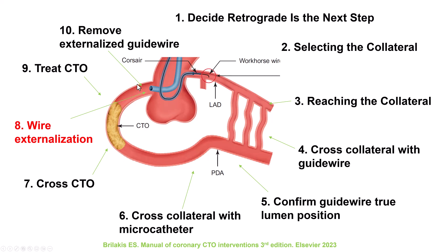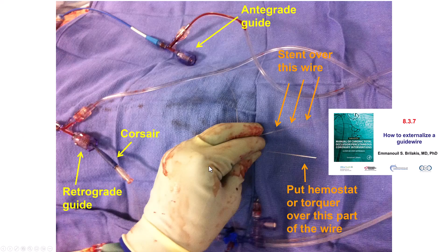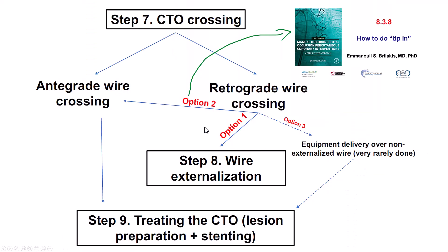Once we cross the CTO, the next step in most cases is to proceed with externalization of the retrograde guidewire. The retrograde wire goes through the collateral vessel or bypass graft, through the proximal CTO vessel, and comes out through the antegrade guide catheter, allowing us to use the front end of the externalization wire to advance balloons and stents to the lesion. However, there is another option apart from wire externalization: advancing an antegrade wire through the CTO using techniques such as the tip-in or a dual-lumen microcatheter over the retrograde guidewire, after which treatment proceeds in the standard fashion.